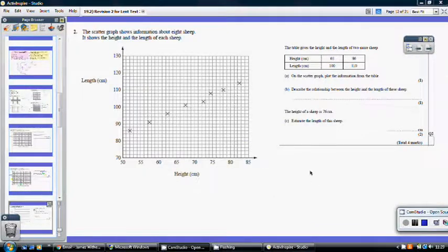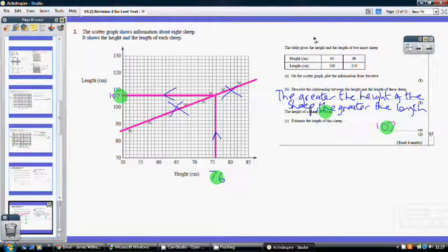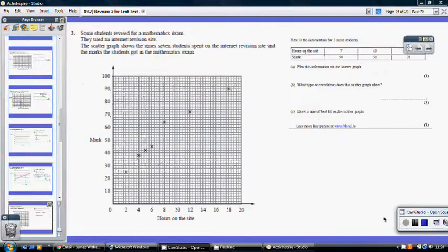Question two. So pause the video. Okay, so we've got to add these extra two points here. So when the height is 65, the length is 100. So that's that point there. And when the height is 80, the length is 110. That's that point there. Now, describe the relationship. Now, you've got to be very careful with the wording. If it asks you to describe the correlation, then you would have said positive correlation. But when it asks you to just describe the relationship, you've just got to put it into normal English. So you're just going to say something like, the greater the height of the sheep, the greater the length. Now, to answer part C, when I've got to estimate from my graph, remember to put in a line of best fit. You must put in a line of best fit.